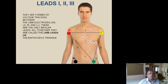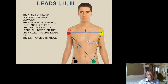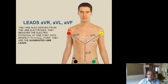When the right arm, left arm, and left leg are connected, these form the standard limb leads. Lead I connects right arm to left arm, Lead II connects right arm to left leg, and Lead III connects left arm to left leg. This is the classic Einthoven's triangle, showing the vector direction from right to left and upwards to downwards with Leads II and III.